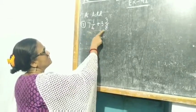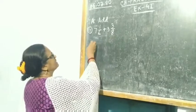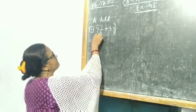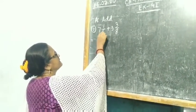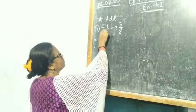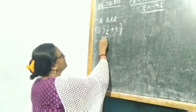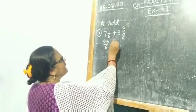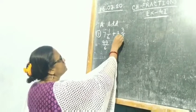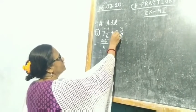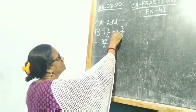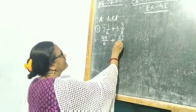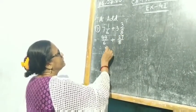First we change them into normal fractions. So let us change 7 1/6 into a normal fraction: 6 into 7 is 42, plus 1 is 43 by 6. Plus 8 into 3 is 24, plus 3 is 27 by 8.